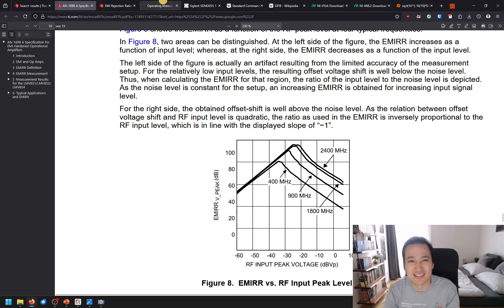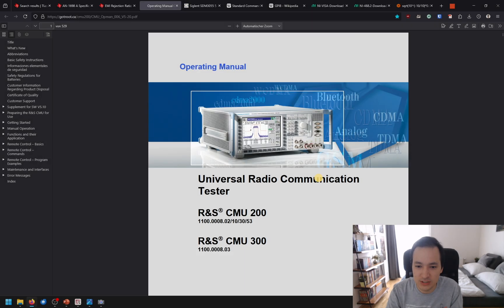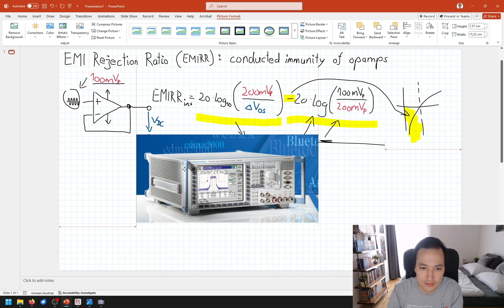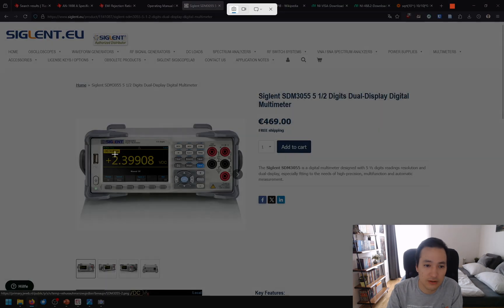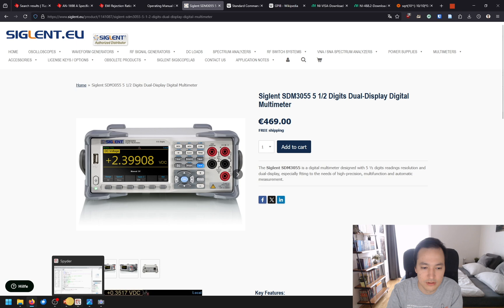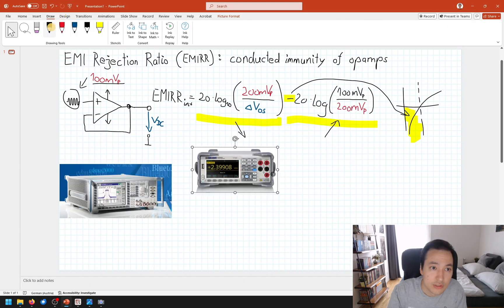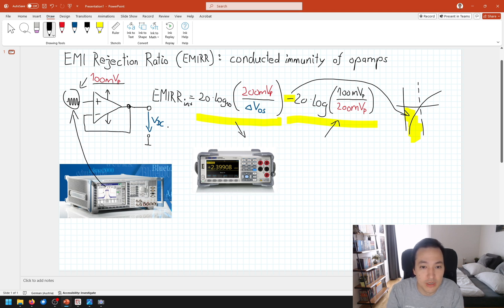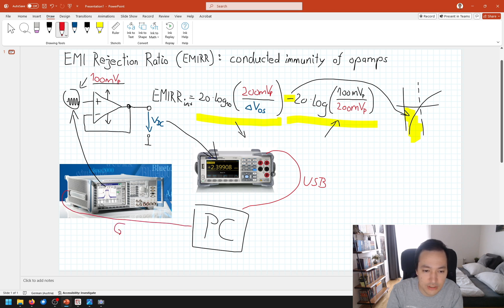For our lab exercise, I have prepared two measurement instruments. First, here we have our CMU200. And second, I have here this Siglent voltmeter. We will use the CMU200 to generate our RF signal, and we will use our Siglent voltmeter to capture the DC voltage. Then we will use our PC for automation. We can connect our voltmeter with a USB cable to our PC, and we connect the CMU200 with a GPIB cable.